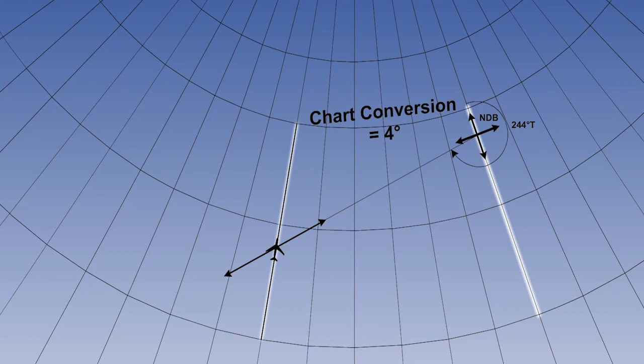We could calculate the convergence between the two meridians and add it to our angle to plot. But, in practice, it is much simpler to draw a parallel construction line, which we will call the false meridian, and plot the simple reciprocal from that. This is the method that is actually used in practice if the chart convergence is large enough to make the correction worth applying.